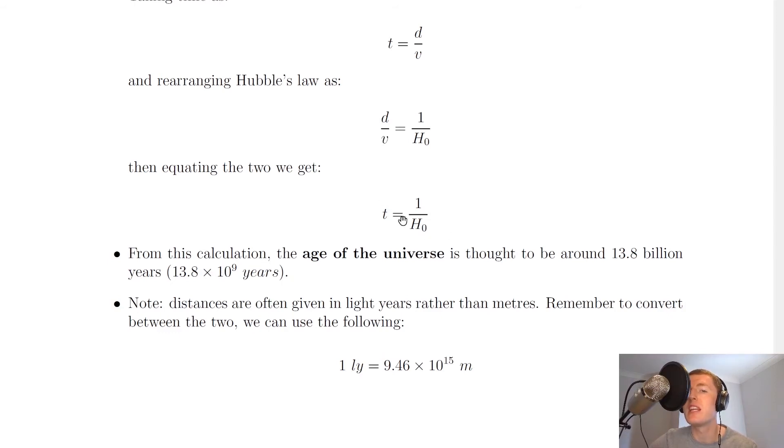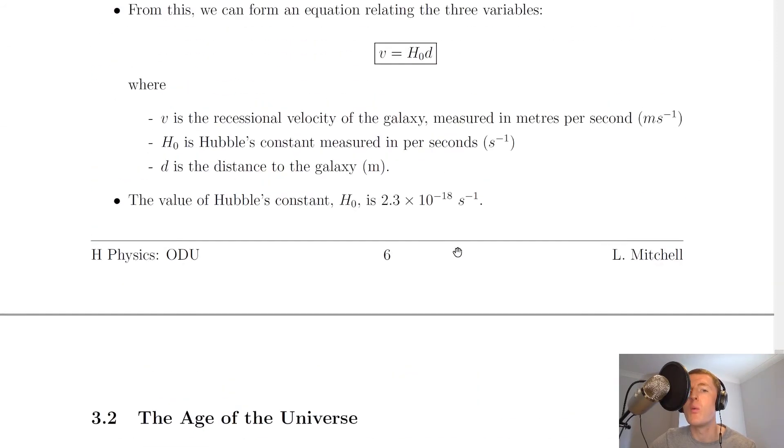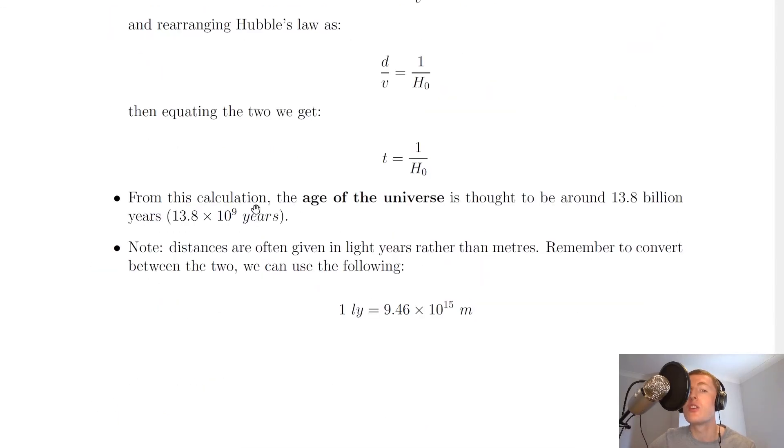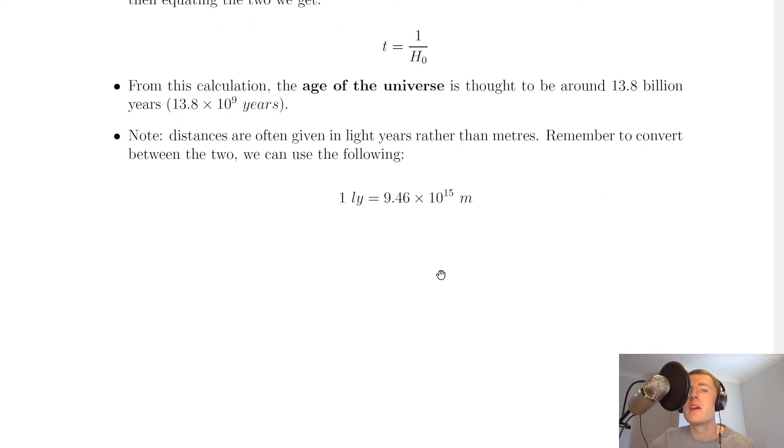That would be from substituting in here: one divided by our constant H₀, which was 2.3 × 10⁻¹⁸ per second. If we do one over that and then convert from seconds into years, you should get a value of 13.8 × 10⁹ or thereabouts.